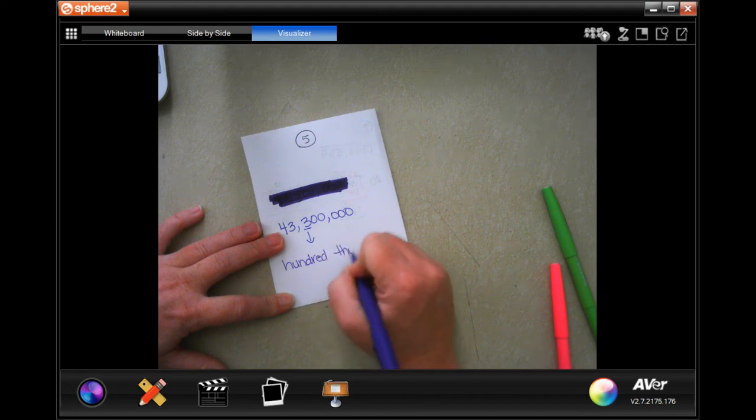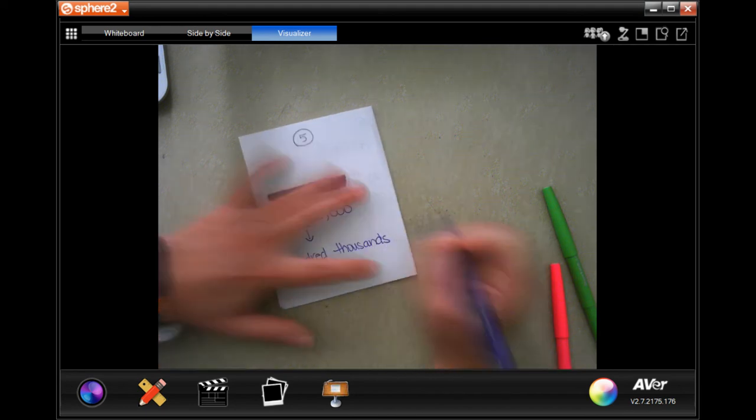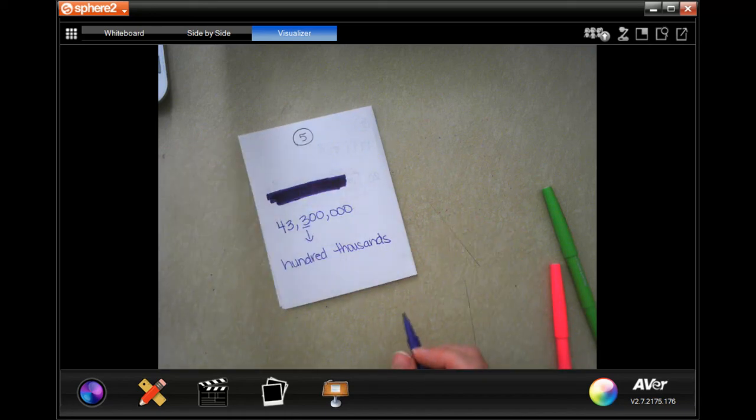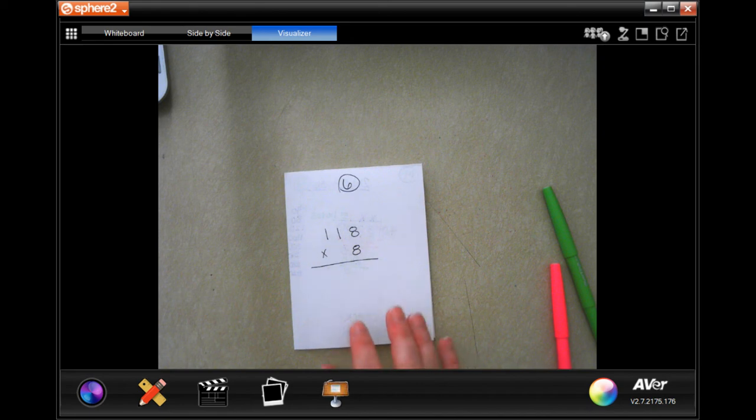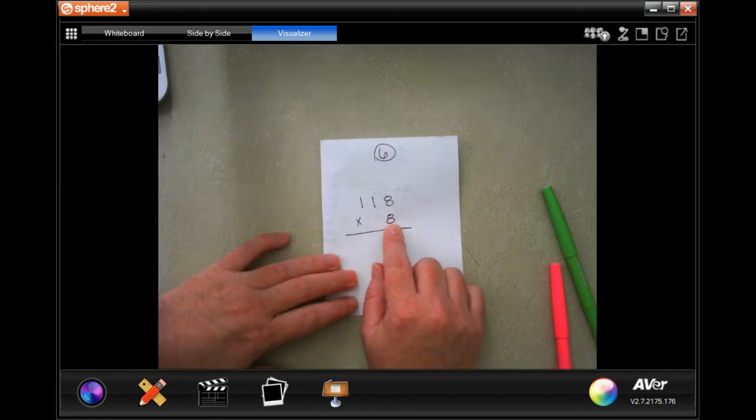Number 6: Grace's Catering Company received an order for 118 apple pies. Grace uses 8 apples to make one pie. How many apples does she need to make all 118? So 8 apples for one pie, you have to make 118, you need to multiply it.